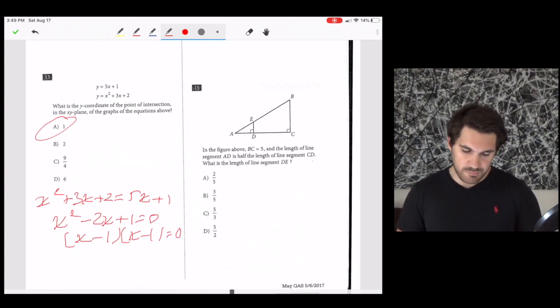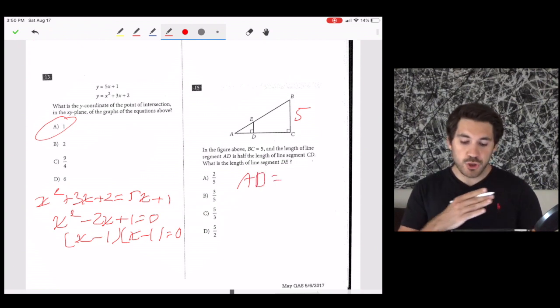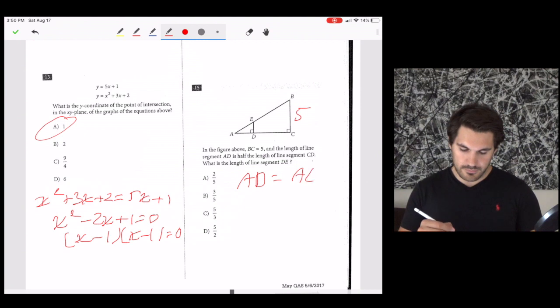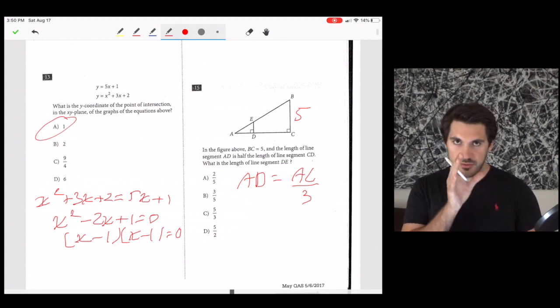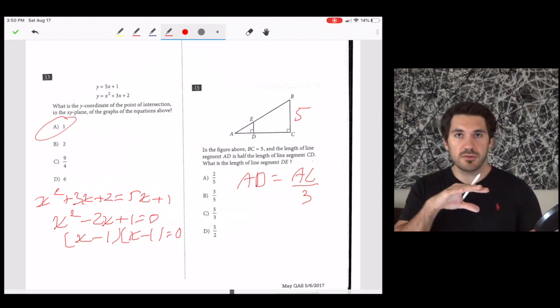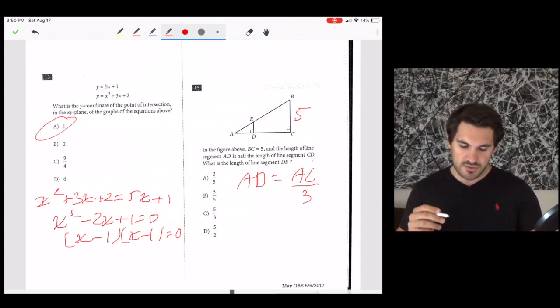Number 15, in the figure above, BC is 5. The length of segment AD is half the length of CD. What is the length of segment DE? If the length of segment AD is half the length of segment CD, that means AD is a third of AC. Make sense? Because if it's 1 half of DC, that means together it only gives 1 third of the whole thing. In triangles, sides are always in proportion to each other. So if AD is a third of AC, that means ED is a third of 5. A third of 5 is the same thing as 5 over 3, so C is our answer.